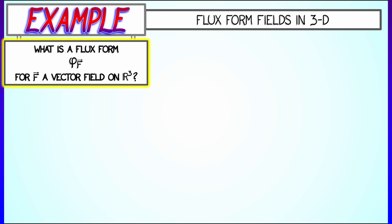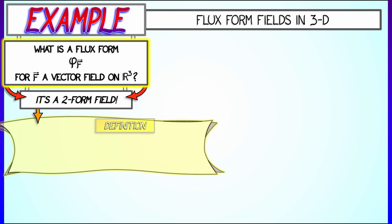What is a flux form in 3D? Remember, in 2D, a flux form was a one-form field that measured how much stuff flows across a boundary. But in 3D, the flux form of a vector field is a two-form field. Here's a definition.